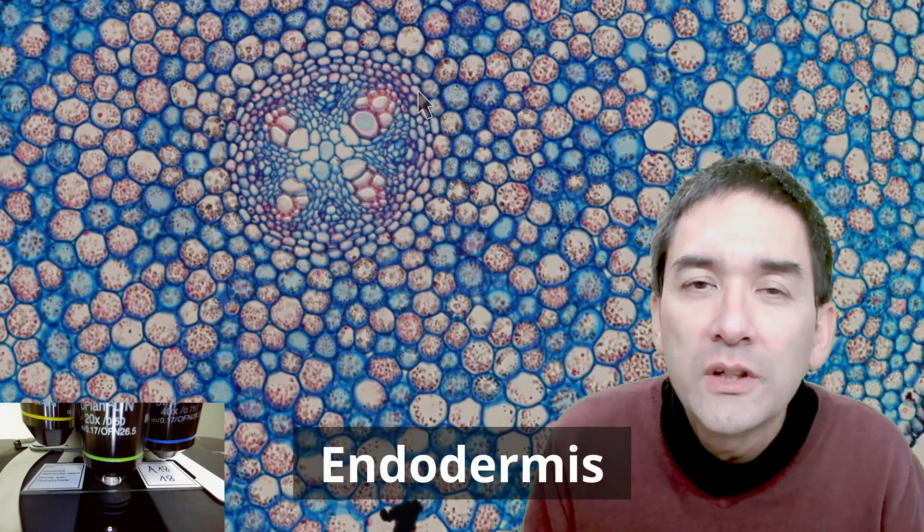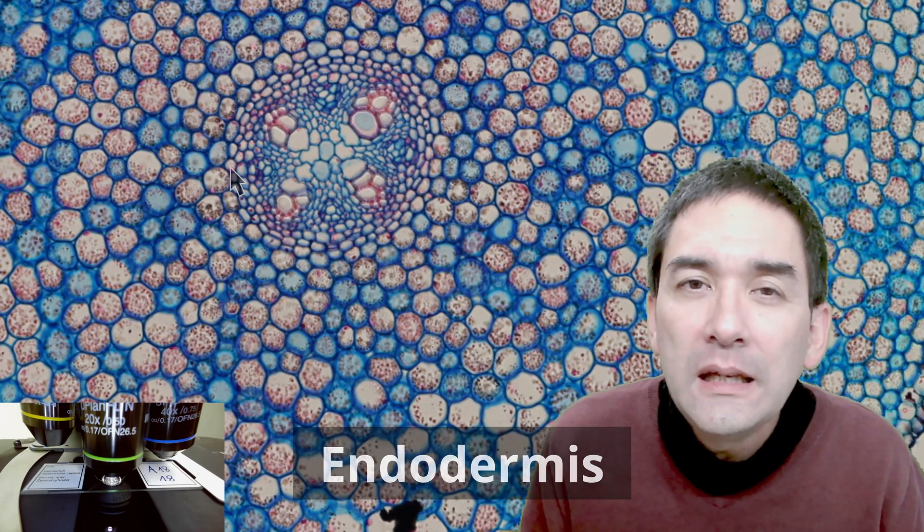And then this here as I mentioned already before that is the cortex and here on the inside, let's also move this a little bit more into the center. This here is a round layer of cells here going around the vascular tissue. This is referred to as the endodermis and this endodermis plays a very critical role in actually making sure that no harmful substances are able to reach the central vascular bundle.